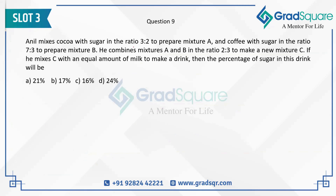We will mix cocoa with sugar in the ratio 3:2 to prepare mixture A, and coffee with sugar in the ratio 7:3 to prepare mixture B. So we have mixture A and mixture B, and the common element in both of these mixtures is sugar.